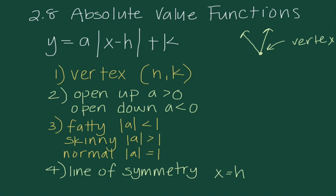The way that we find the vertex is H, K. Note that it says negative H in the equation, so we take the opposite of that value. If it says X minus 2, we write 2; if it says X plus 7, we write negative 7. The Y value of our vertex is whatever the constant K is — if it says plus 5, it's 5; if it says minus 20, it's negative 20.